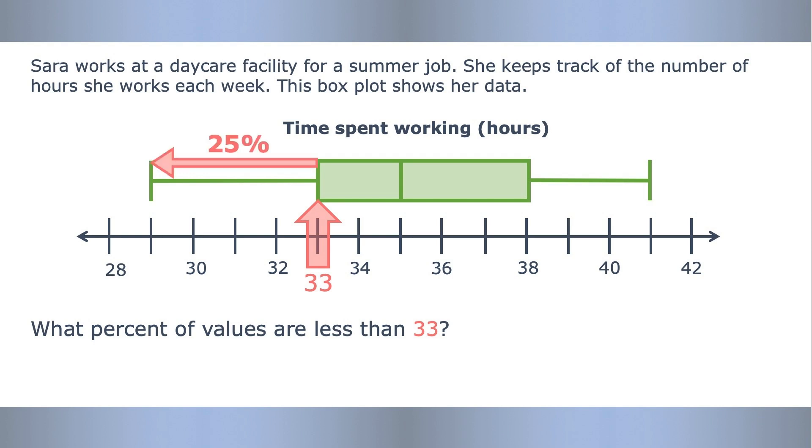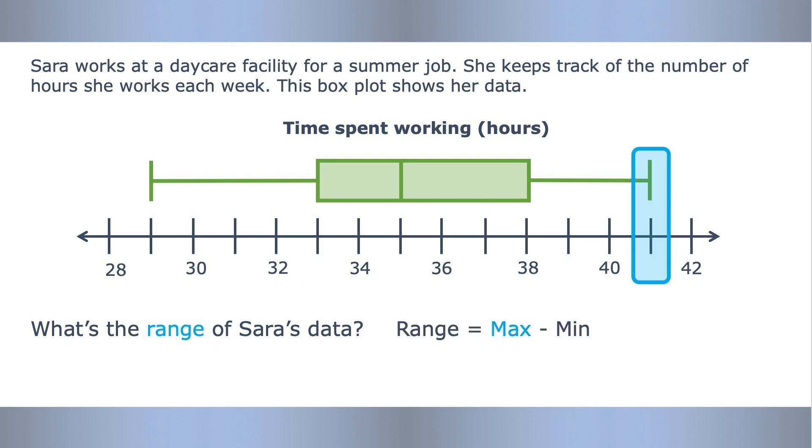Let's try another question with this data set. What's the range of Sara's data? Range can be found by subtracting the minimum from the maximum. The maximum value is 41, the minimum value is 29. 41 minus 29 is 12. The time Sara works on a weekly basis ranges by 12 hours.